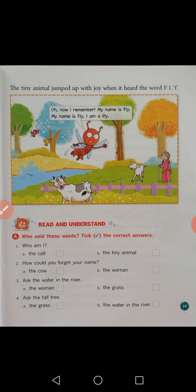Oh, now I remember — my name is fly! My name is fly! I am a fly! The tiny animal's name is fly. Before knowing the name of the fly, the animals we come to know in this lesson are: the calf, the pretty cow, the woman with the walking stick, the green grass, the river, the tall tree, and the pretty bird in the nest. These characters also we come across in this lesson. So here is the end of the lesson.